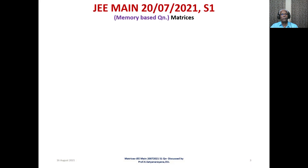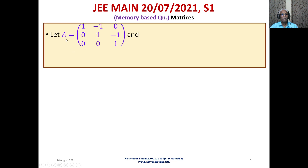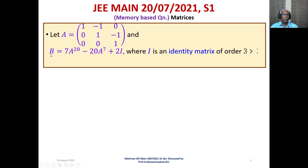We now state the problem. Let capital A be a 3×3 matrix whose first row is [1, -1, 0], second row is [0, 1, -1], third row is [0, 0, 1]. Capital B is equal to 7 times A²⁰ minus 20 times A⁷ plus 2I, where I is the identity matrix of order 3.